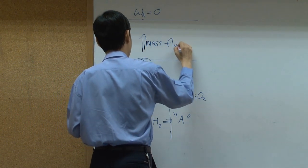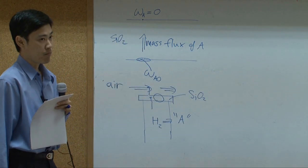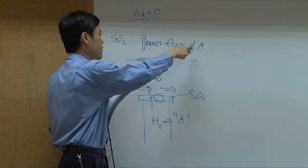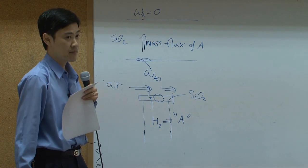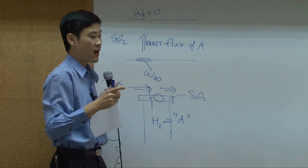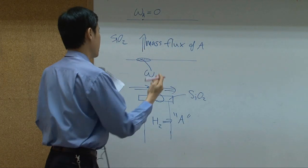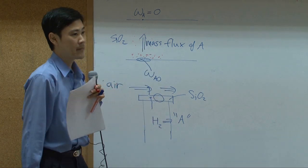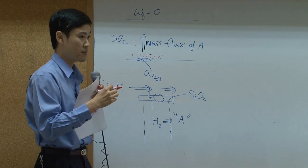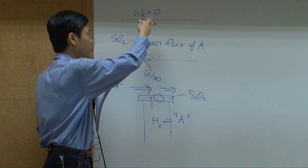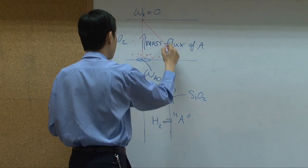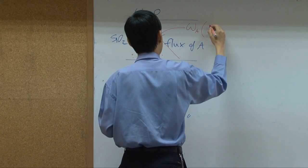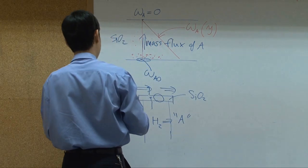There will be a mass flux of A in the system. Once you reach steady state, there will be molecules of A everywhere in this piece of silica as it moves through the pores up to the top. However, the concentration down here will be high and up here lower, so there will be a gradient of concentration. If you find ω_A as a function of position y in your system, you should be able to draw out the concentration profile — this line represents concentration of A as a function of y, where y is the direction through the thickness of the silica layer.